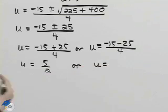The other solution would be negative 15 plus negative 25, which is negative 40 divided by 4 is negative 10.